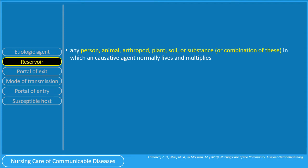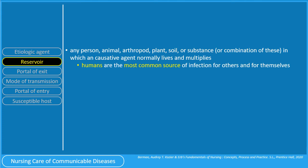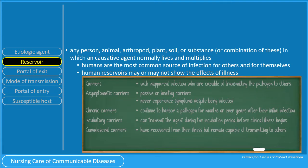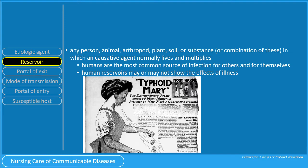Humans are the most common source of infection for others and for themselves. Human reservoirs may or may not show the effects of illness. Carriers are individuals with inapparent infection who are capable of transmitting the pathogen to others. These carriers never experience symptoms despite being infected. Chronic carriers continue to harbor a pathogen for months or even years after their initial infection. One notorious chronic carrier is Mary Malone, or Typhoid Mary, who was an asymptomatic chronic carrier of Salmonella typhi. As a cook in New York City and New Jersey in the early 1900s, she unintentionally infected dozens of people until she was placed in isolation on an island in the East River, where she died 23 years later.